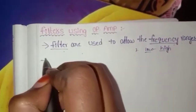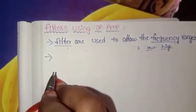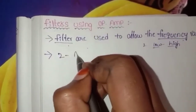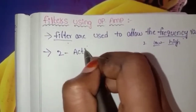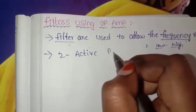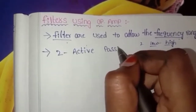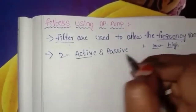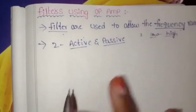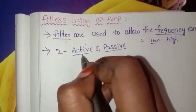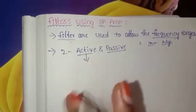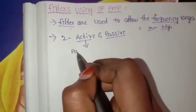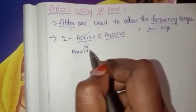Filters are of two types: active and passive. Active filters and passive filters are both types of manufacturing. Active filters are one type and passive filters are another type.